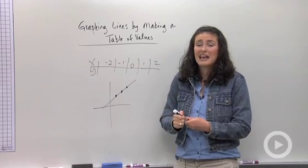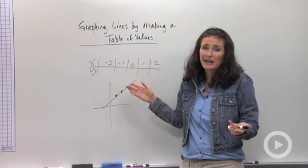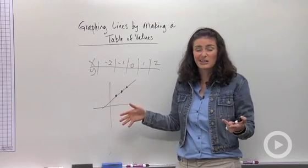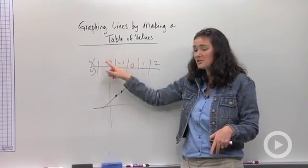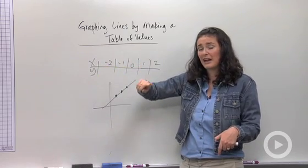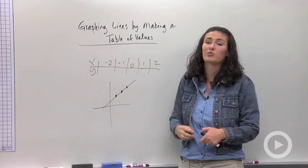Most people tend to do at least three points in their tables to start with. I would recommend for your first tables you start by doing about five points. And again you're going to substitute your x numbers in to find your y values and then put those dots on the graph. They should make a ruler straight line.